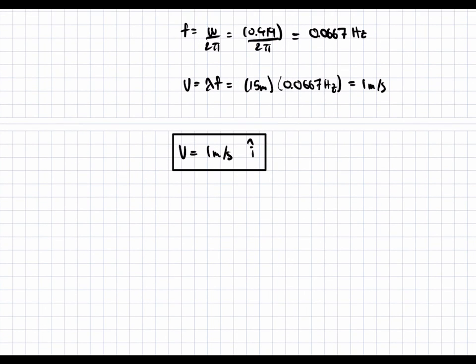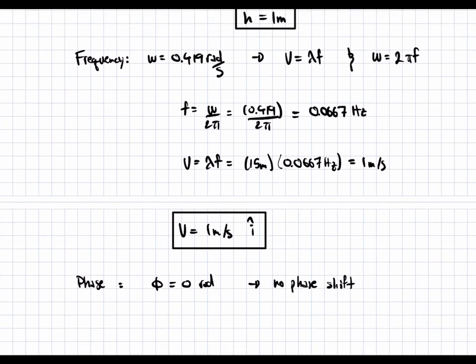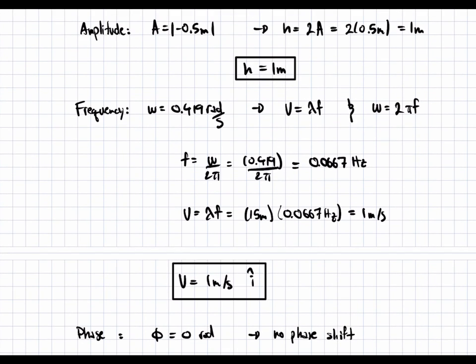The last part of the question has to deal with the phase. So we know that phi from what we're given, phi is equal to 0 radians. Therefore, there is no phase shift. And this is not part of the question, because there is no phase shift. But essentially, from the amplitude, we derive the height of the wave. And from the frequency, we derive the velocity of the wave, given a wavelength.